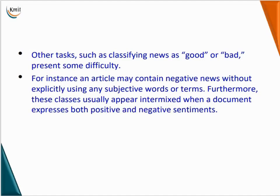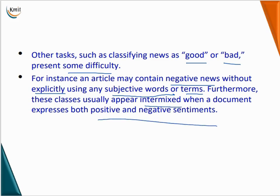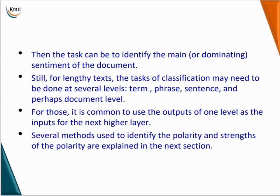Other tasks such as classifying news as good or bad present some difficulty. For instance, an article may contain negative news without explicitly using any subjective words or terms. Furthermore, these classes usually appear intermixed, where a document expresses both positive and negative sentiments. The task can be to identify the main sentiment of the document. For lengthy text, the task of classification may need to be done at several levels — for instance, terms, phrases, sentences, and perhaps the total document level — where the output of one level is used as input to the next higher level.